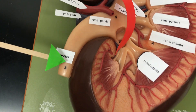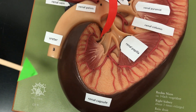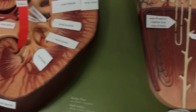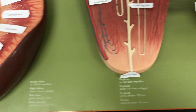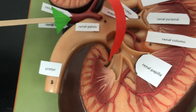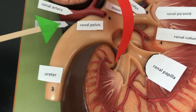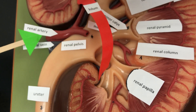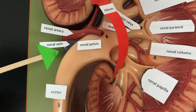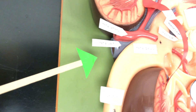The urine is going to be sent to the ureter, which will be stored in the bladder before being excreted from the body. We have the renal artery that's going to bring blood to the kidney, and the renal vein that's going to take blood away from the kidney.